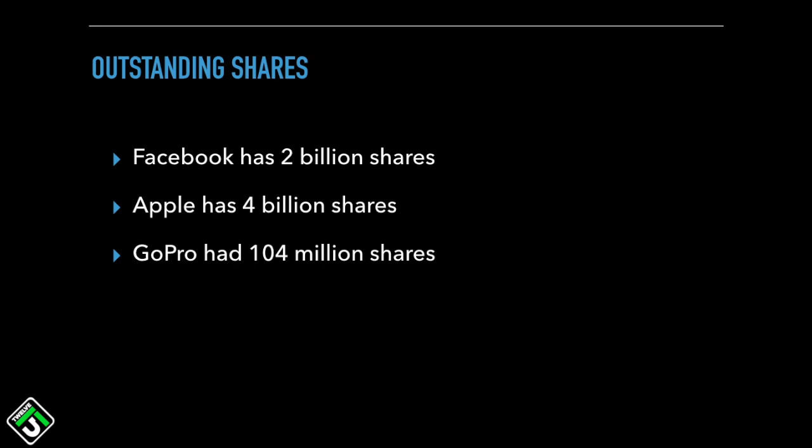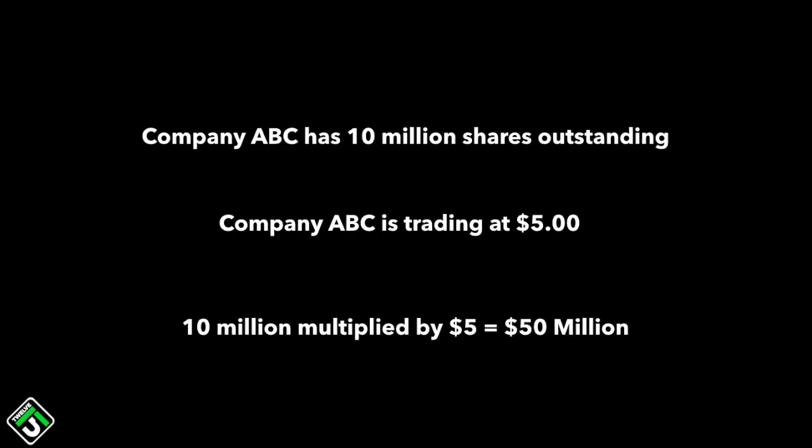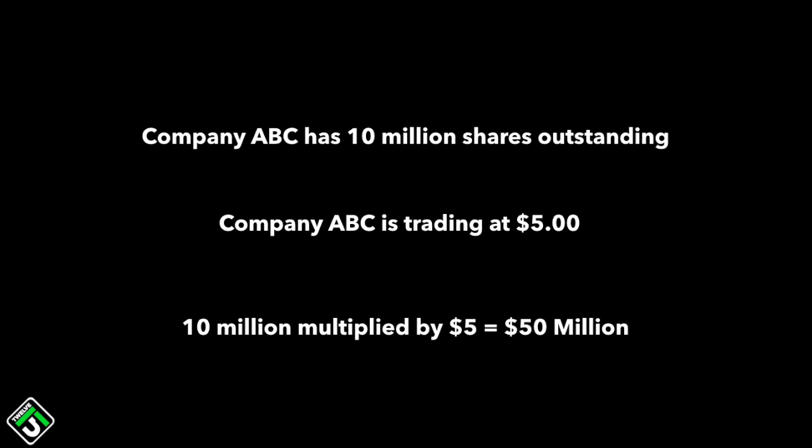This total amount is called outstanding shares. To evaluate a company, all you have to do is take the total amount of outstanding shares and multiply it by its stock price. So if a company called ABC had 10 million outstanding shares and its stock price was $5, you would multiply 10 million by $5 and know that company ABC is a $50 million company.